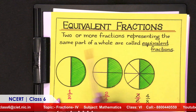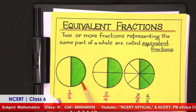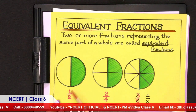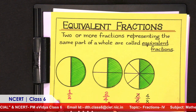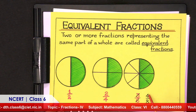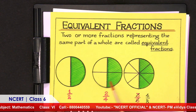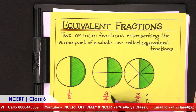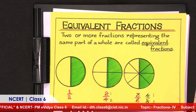Two or more fractions representing the same part of a whole are known as equivalent fractions. Here I have a chapati divided into two parts — one half is shaded, representing one upon two. The same chapati divided into four parts with two shaded is two upon four. Divided into eight parts with four shaded is four upon eight. All are equal to one upon two, so they are equivalent fractions.